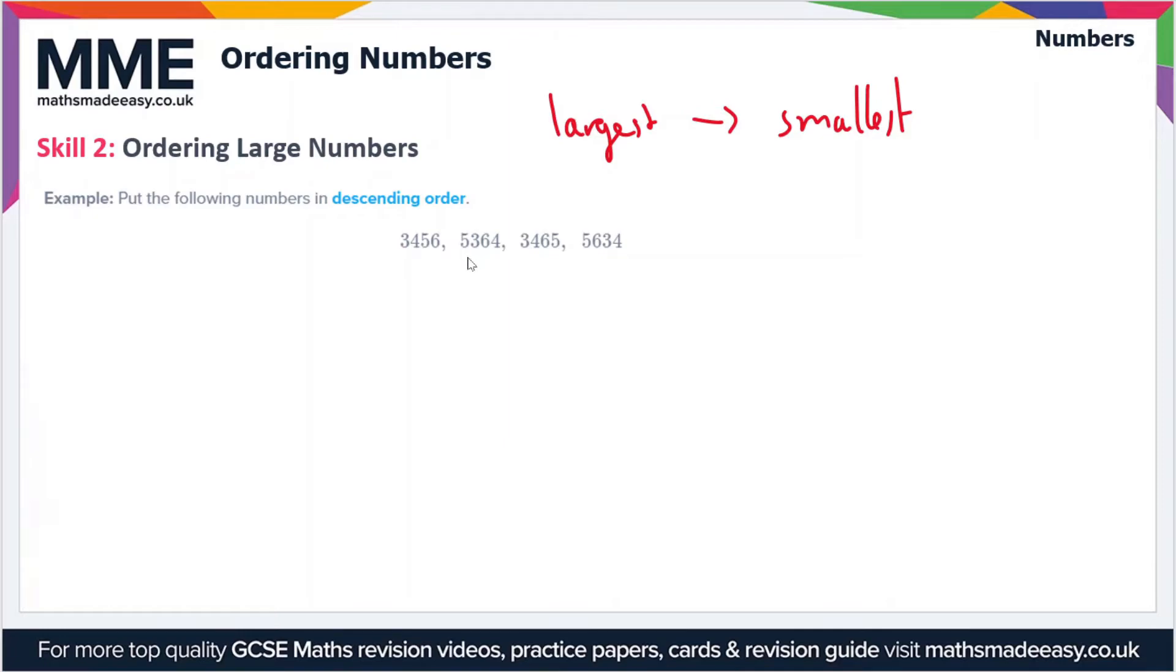So there's lots of fives, sixes, threes and fours here, but let's look at the first digit in all these numbers. We're looking for the largest first. So this one begins with a three, this one begins with a five, this one begins with a three, and this one begins with a five. So let's cross out the ones that begin with a three. So now we've got two that begin with a five. Let's move on to the second digit.